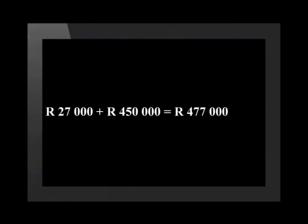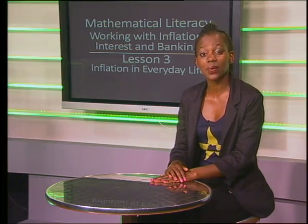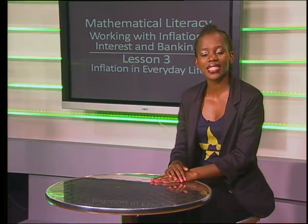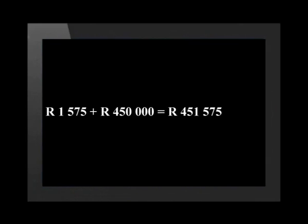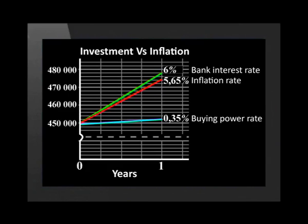The actual value in the account will be 27,000 plus the original amount of 450,000, which equals 477,000 rand. But this amount of money won't have the same buying power as it did when the money was invested. The real buying power can be calculated using the difference between the interest rate and the inflation rate. This means that the buying power of the final amount will be roughly equal to the buying power of 451,575 rand on the day it was invested. This graph shows the difference between the bank interest rate, the inflation rate, and the real buying power of the investment.